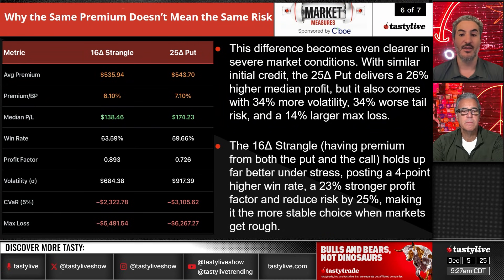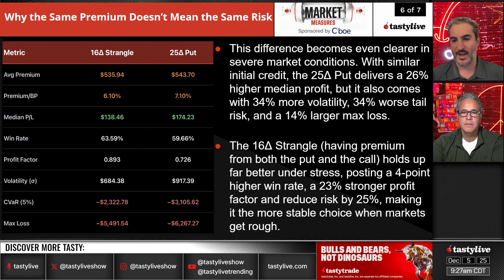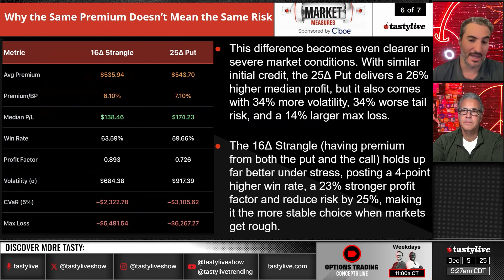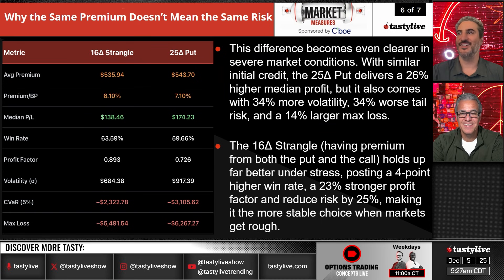The 16 delta strangle, with the same amount of premium, holds up far better under stress — posting a four-point higher win rate, a 23% stronger profit factor, and reduced risk by 25%. That's not a shock because you're selling some short delta. Even though the market has gone mostly up, the strangle has still outperformed on a risk-adjusted basis.